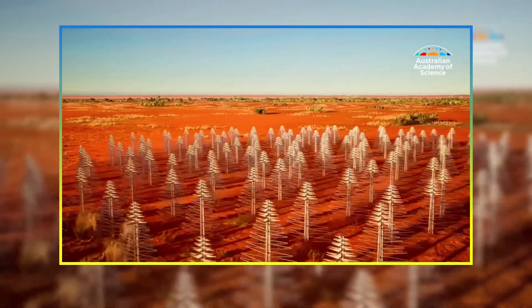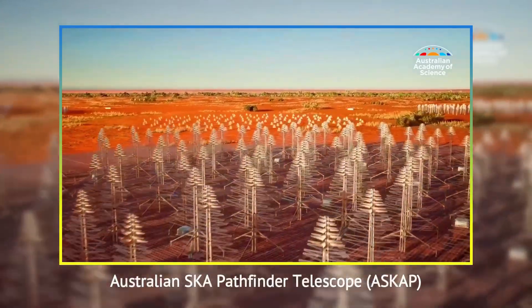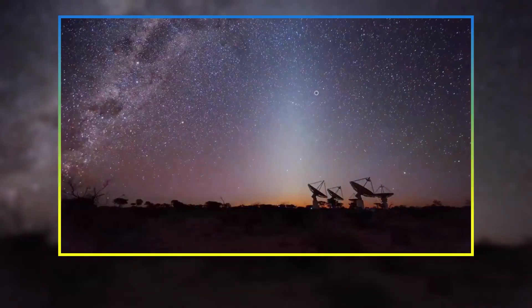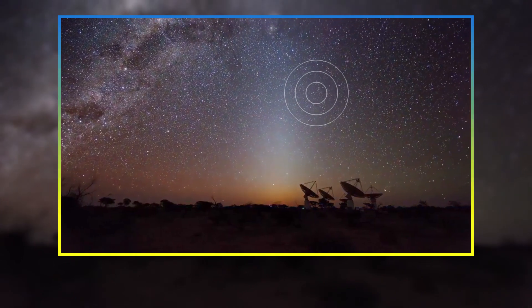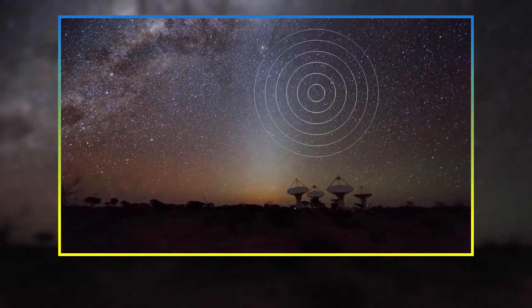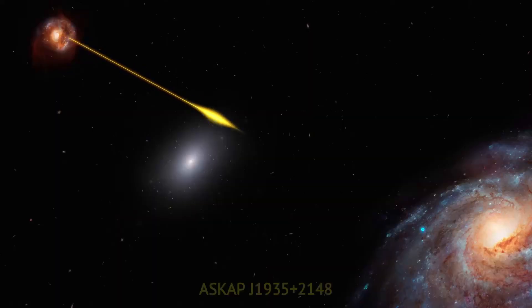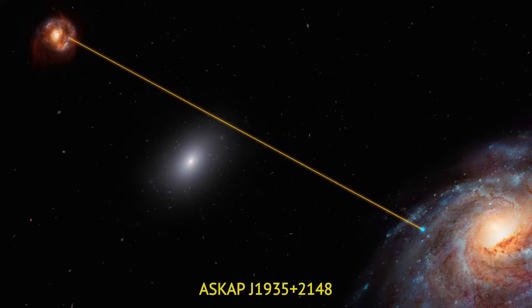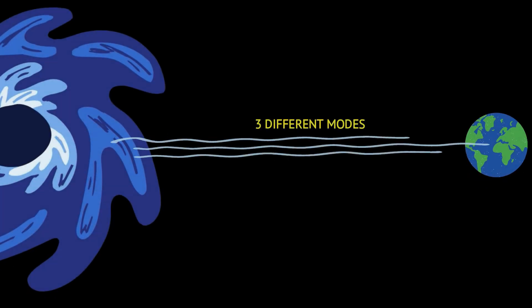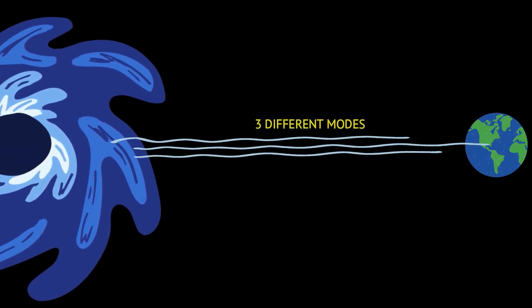The signal was first detected in data collected by Australia's ASCAP radio telescope, which monitors a large portion of the sky for brief transient pulses. Officially named ASCAP J1935-2148, the signal appears to repeat every 53.8 minutes. What's strange is that the signal goes through three distinct phases.